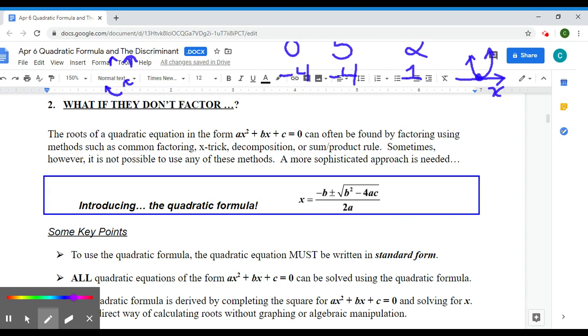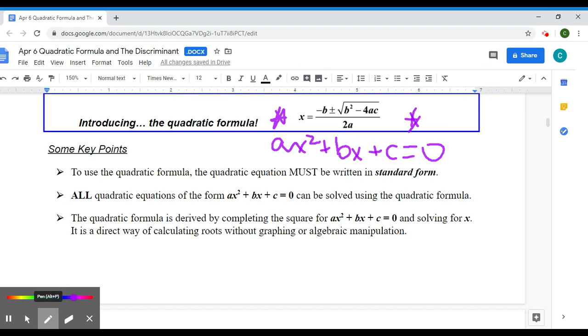Not everything factors nicely. Sometimes we have to use a different trick. And sometimes all that's left to us is using what's called our quadratic formula. So we talked about this just before March break, and that's when I have ax squared plus bx plus c equals 0. Each of those numbers fits into my quadratic formula. So it's negative b plus or minus square root b squared minus 4ac all over 2a.